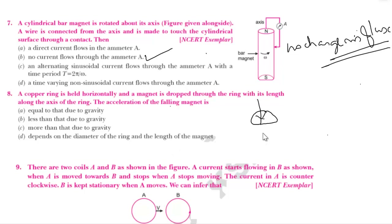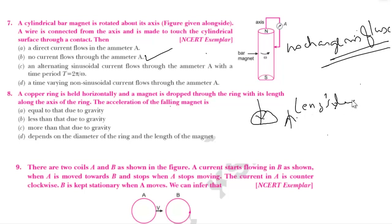Here a copper ring is there and the magnet is moving. While the magnet is moving, magnetic flux linked with the circuit changes. So an EMF is induced, but it will oppose the cause due to the change in flux. As per Lenz's law, it will oppose the cause. Since it is opposing, the net acceleration will be less than that due to gravity.